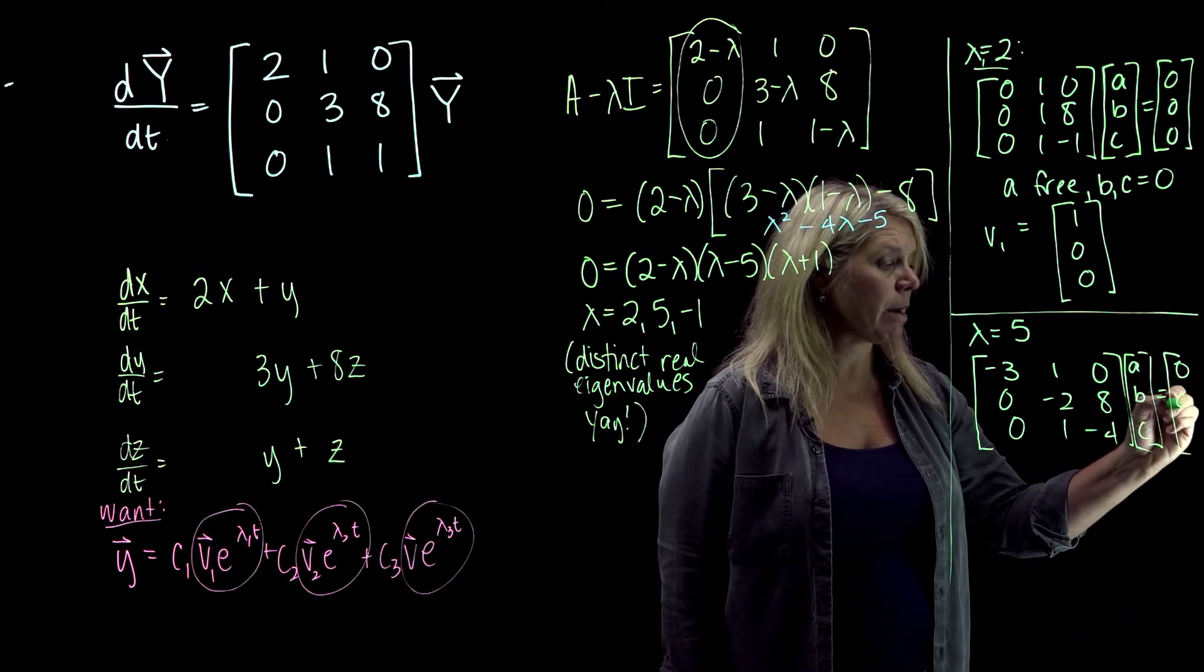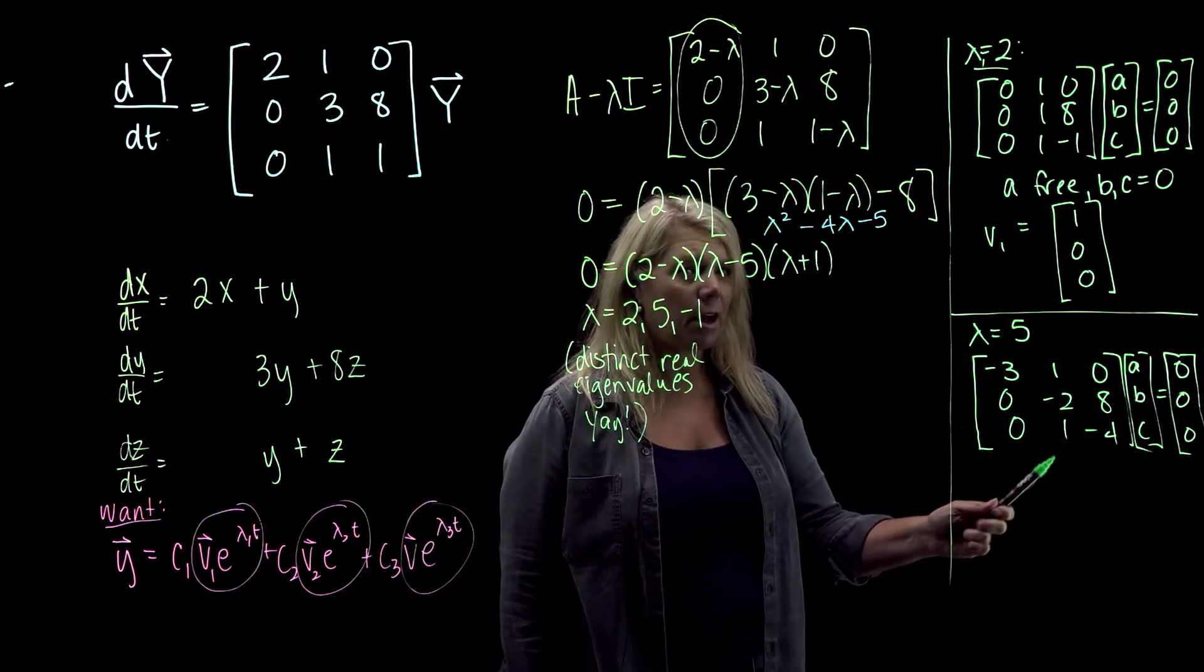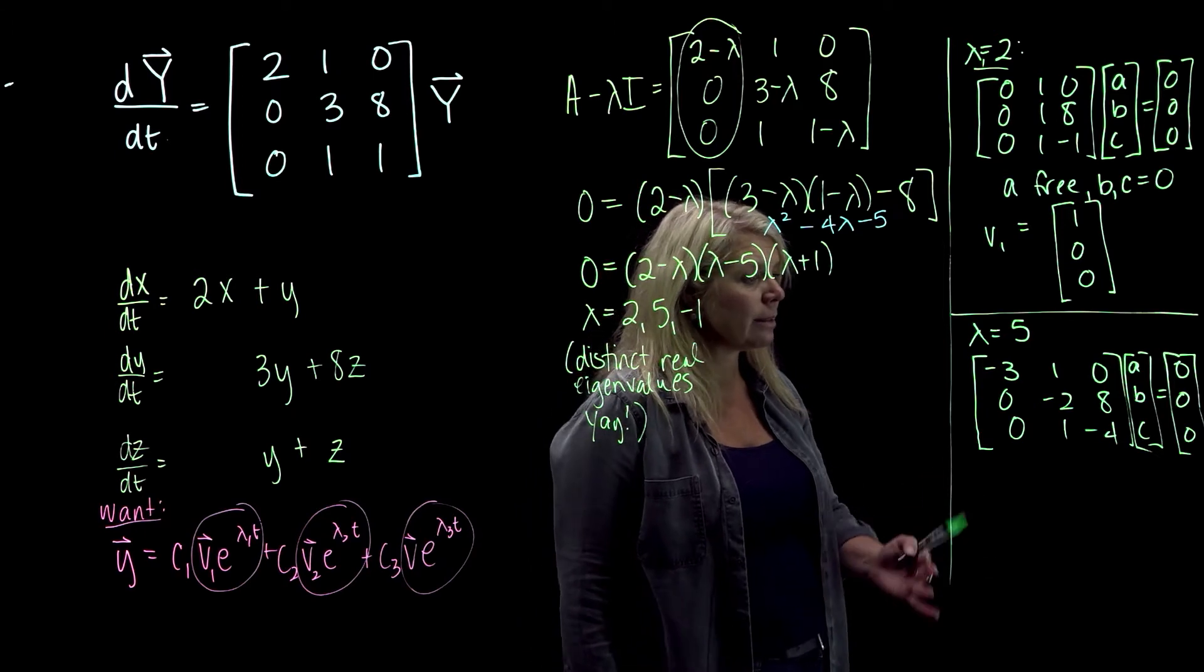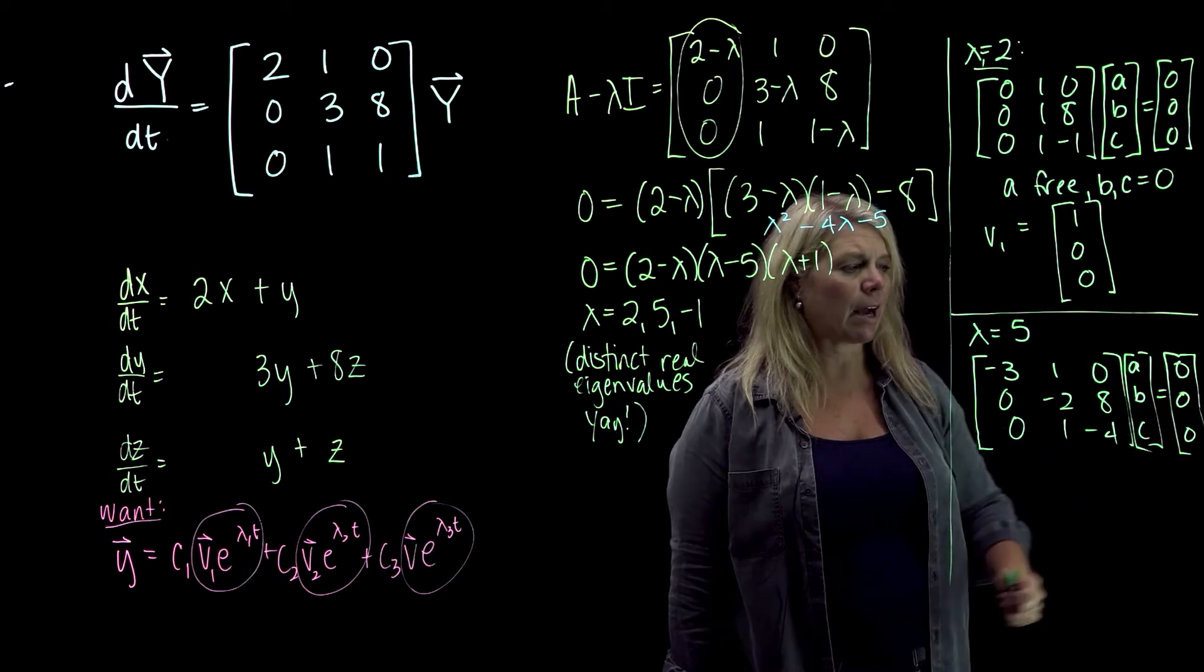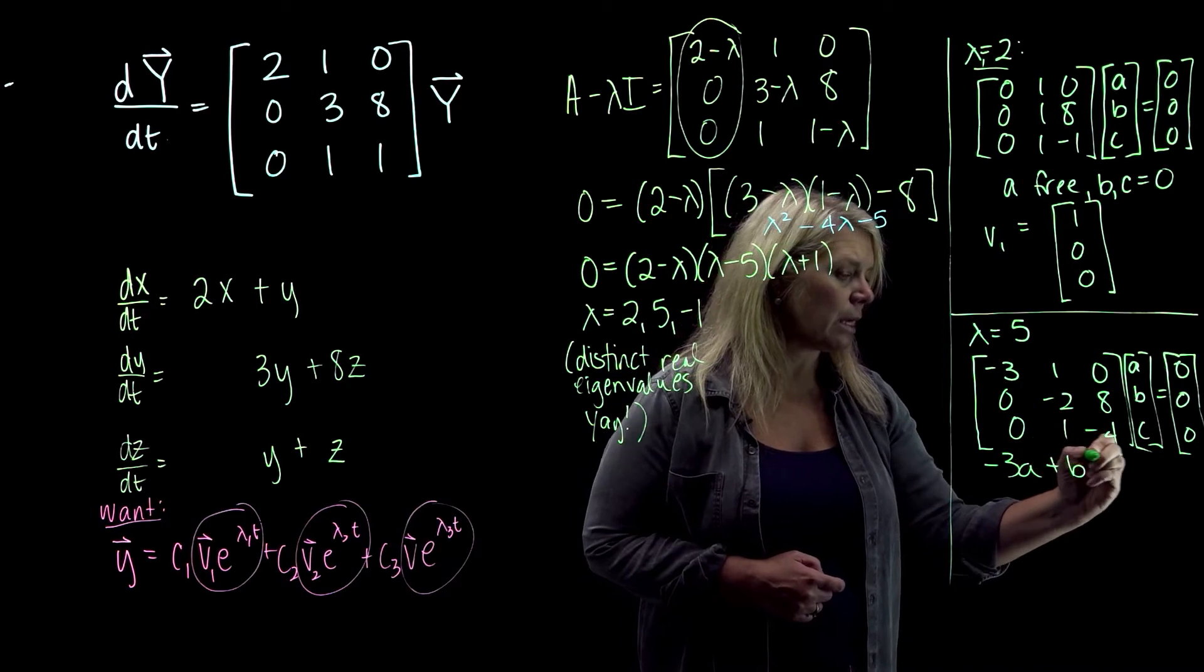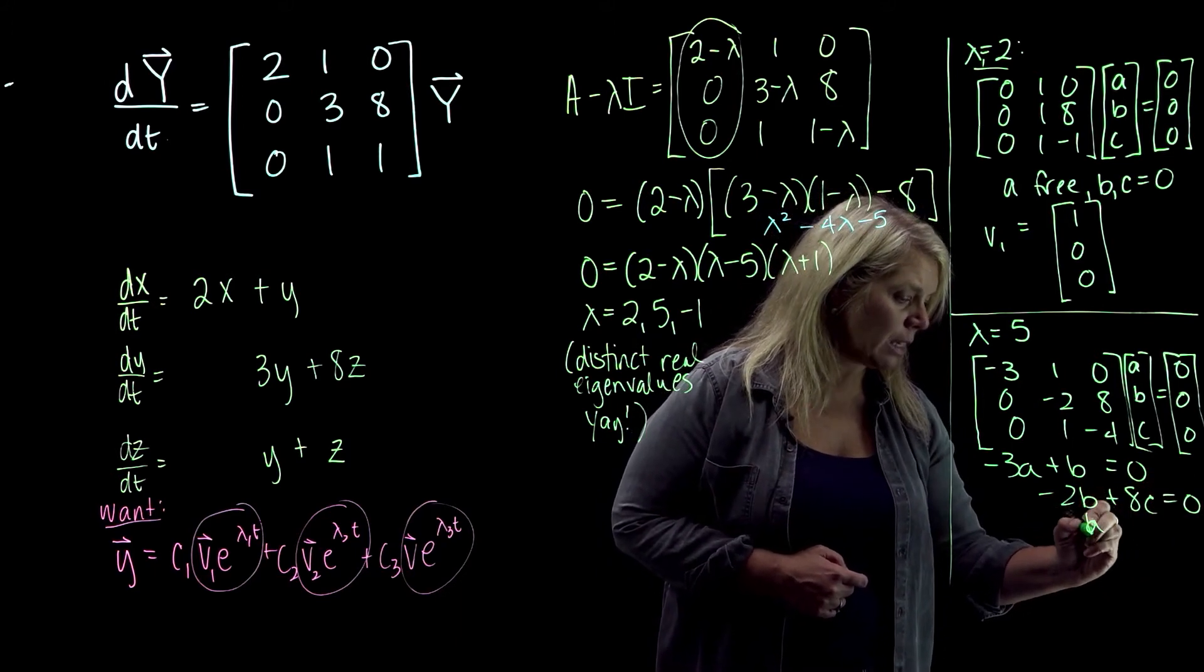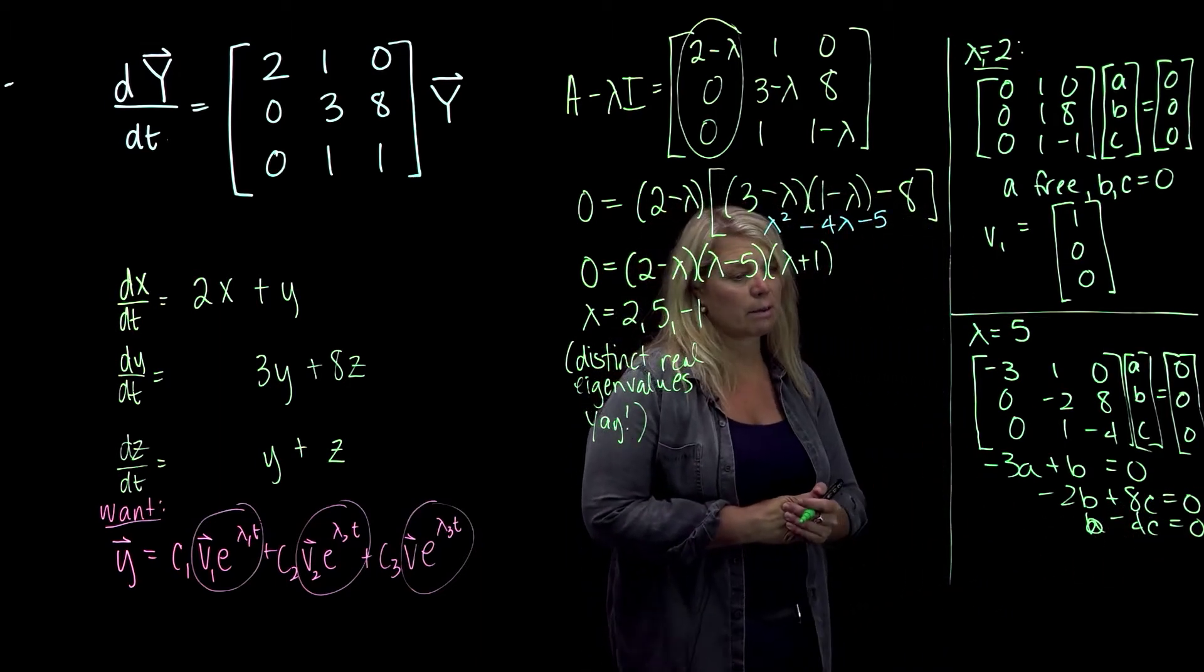So there are a lot of ways to come up with this eigenvector. My advice, especially if you have not had linear algebra before, is to think about it in terms of this solution to this homogeneous system of equations. That's what it means to be in the null space, the vectors that you multiply the matrix times the vector and get the zero vector. And so you've got a system of equations here. Negative 3A plus B equals 0. Negative 2B plus 8C equals 0. B minus 4C equals 0. And you're looking to solve that system of equations.